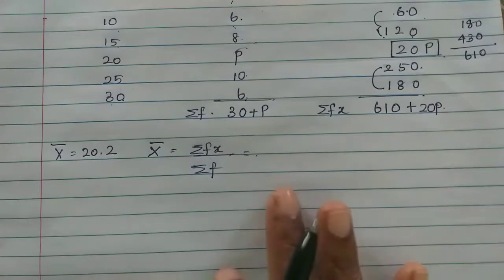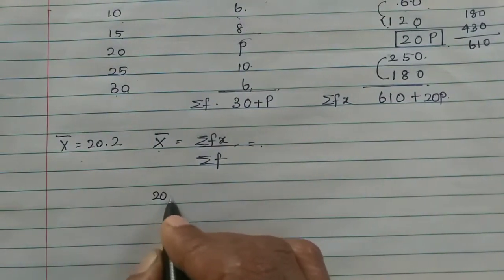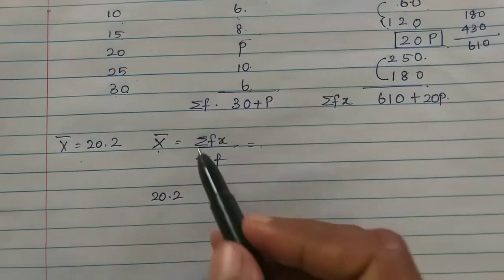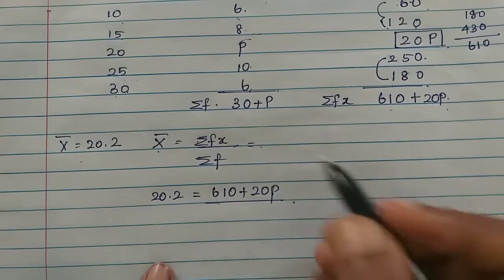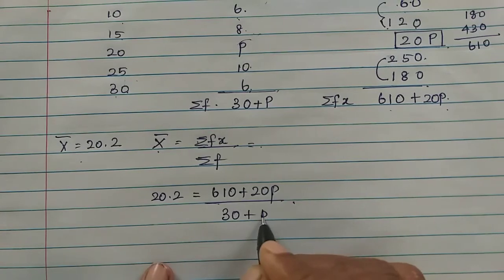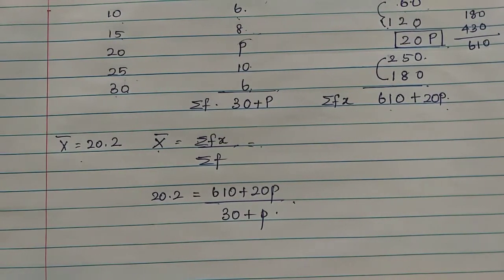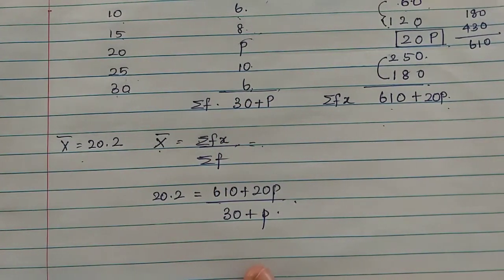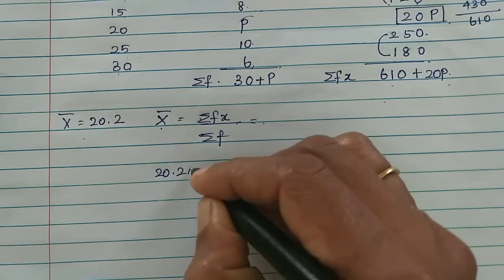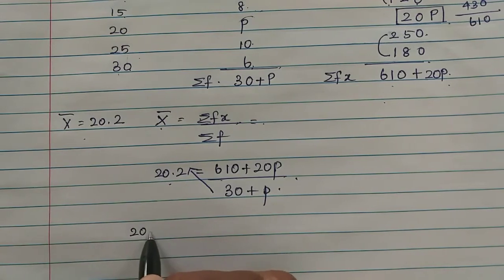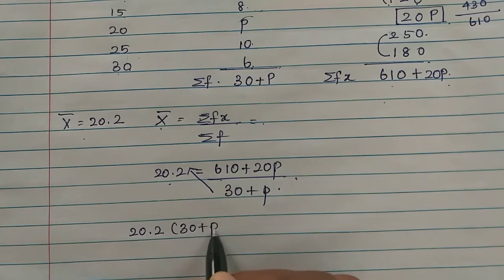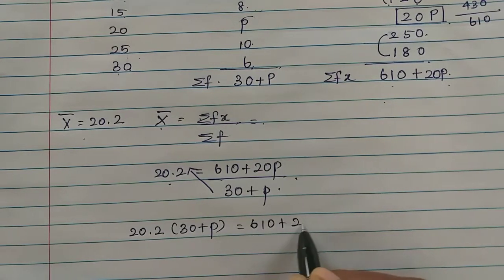Now we can substitute into the formula. x bar is 20.2, that's the mean. Sigma fx is 610 plus 20P, divided by Sigma f which is 30 plus P. So 30 plus P into 20.2.